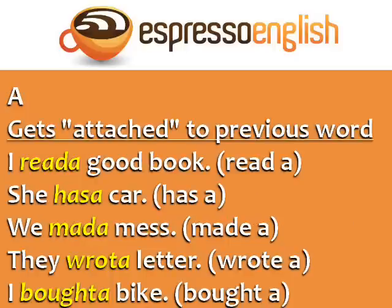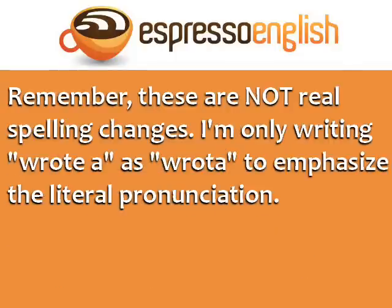The word 'a' often gets attached to the previous word. For example: 'I read a good book.' 'She has a car.' 'We made a mess.' 'They wrote a letter.' 'I bought a bike.' Remember, these are not real spelling changes — I'm only writing 'wrote a' as 'rota' to emphasize the literal pronunciation.